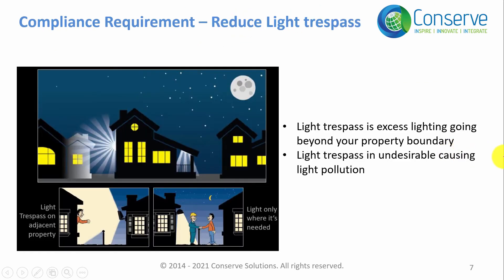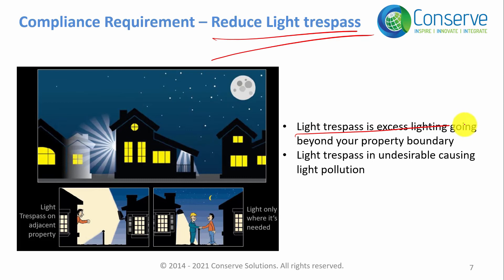The third parameter is light trespass. Light trespass is excess lighting that goes beyond the property boundary. You are allowed to illuminate only your own property, not your neighbor's. It is very important to restrict light within your property boundary. If light goes beyond the property boundary, that is called light trespass, which is undesirable and causes light pollution.